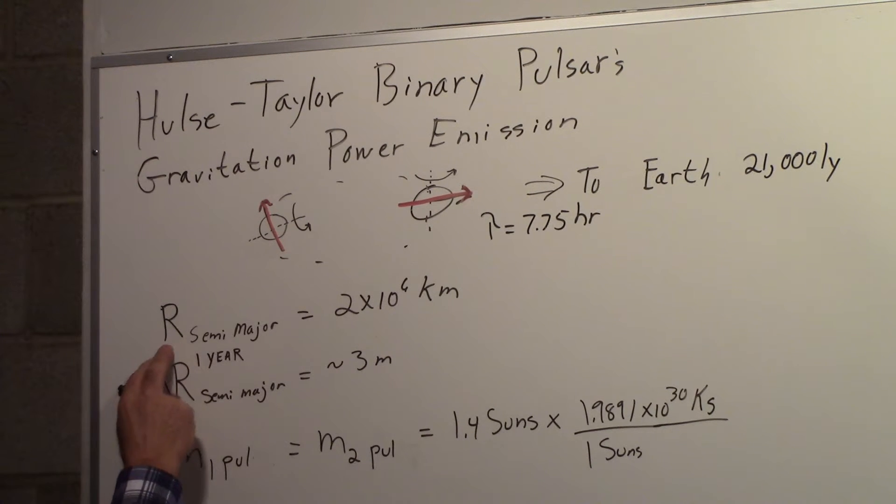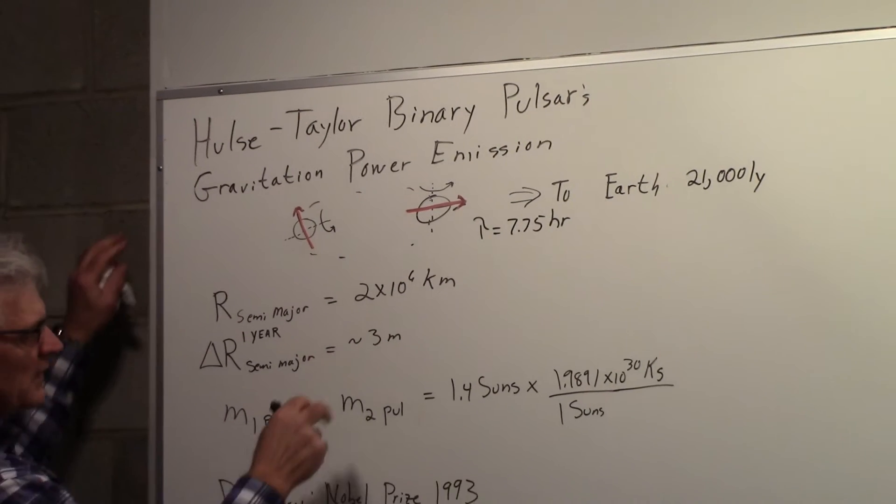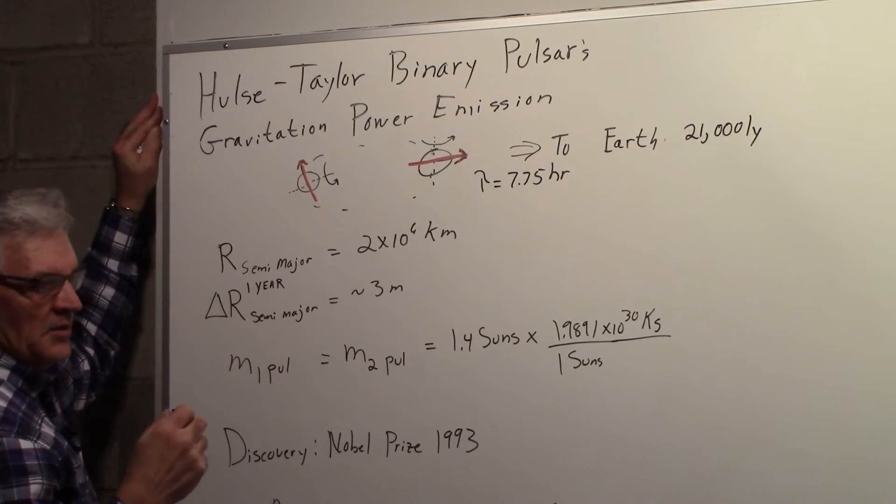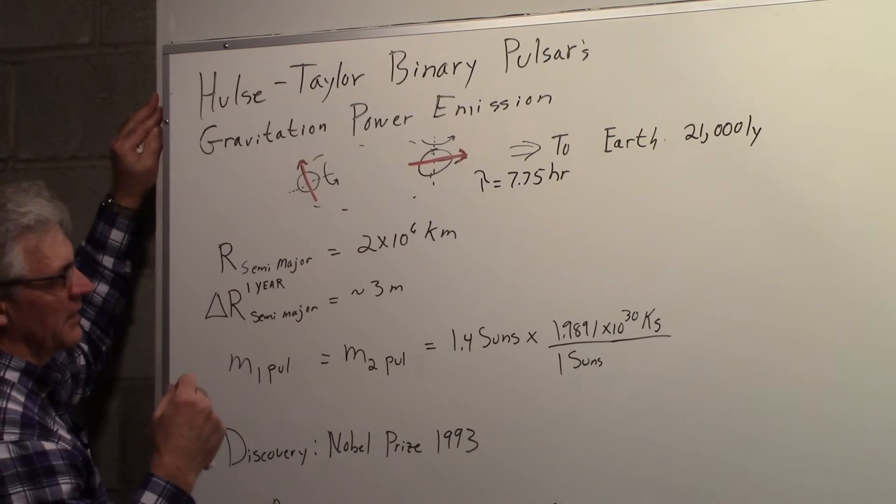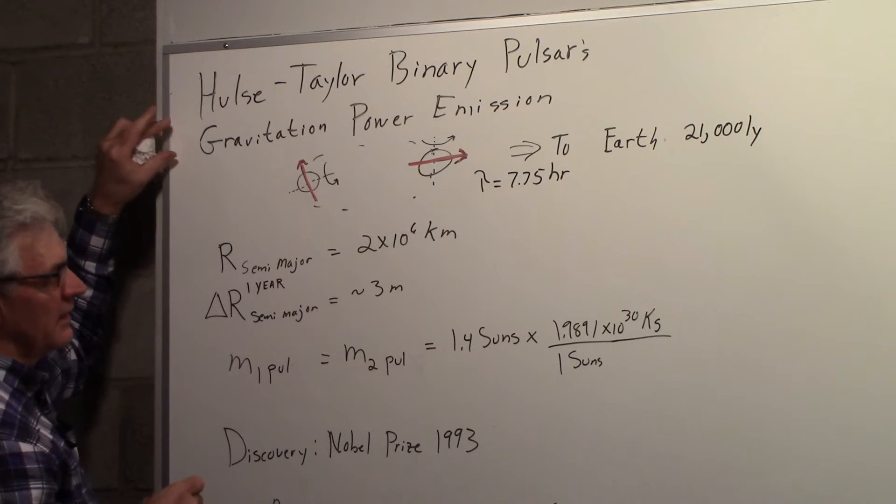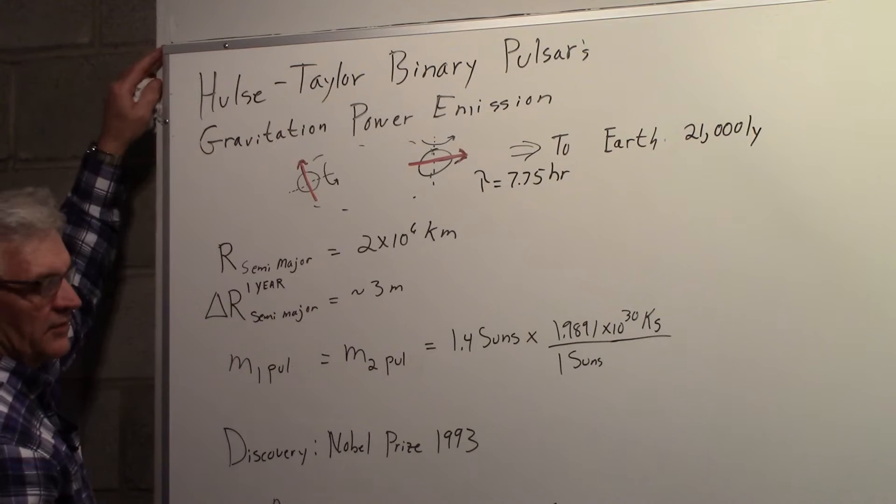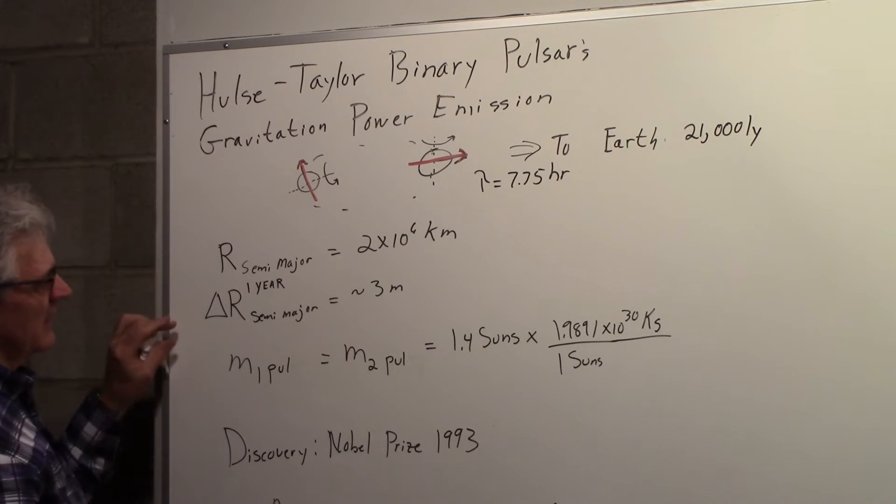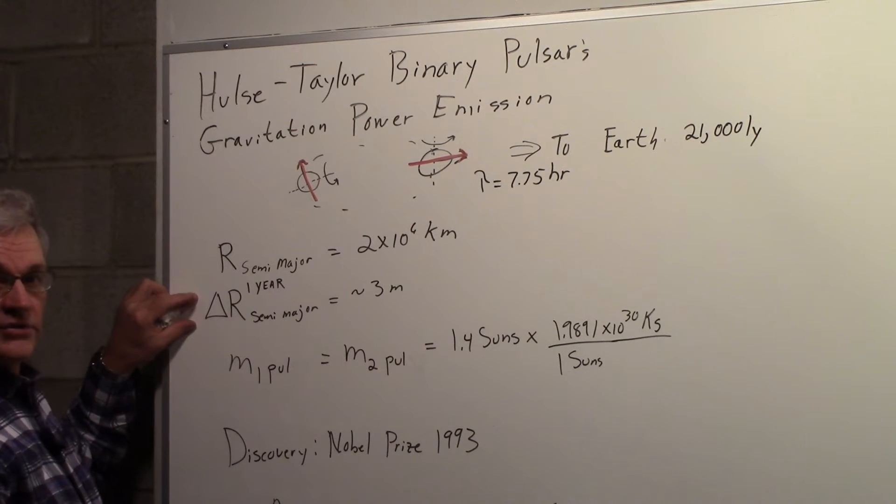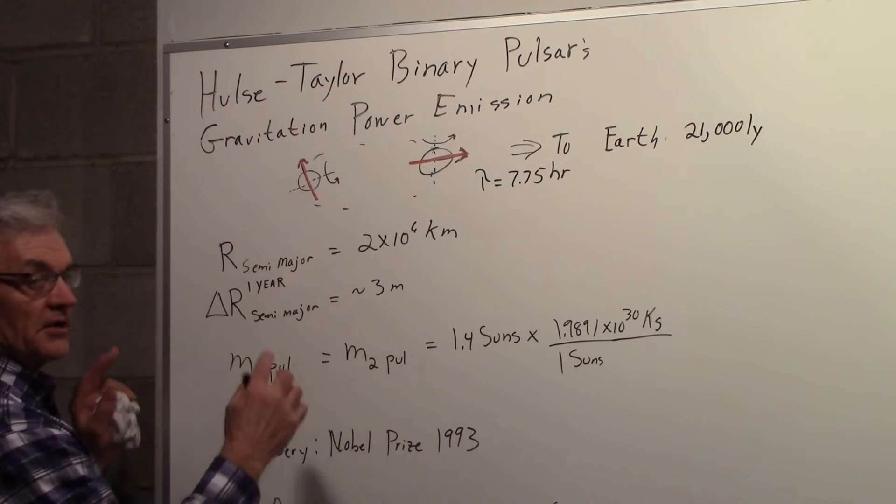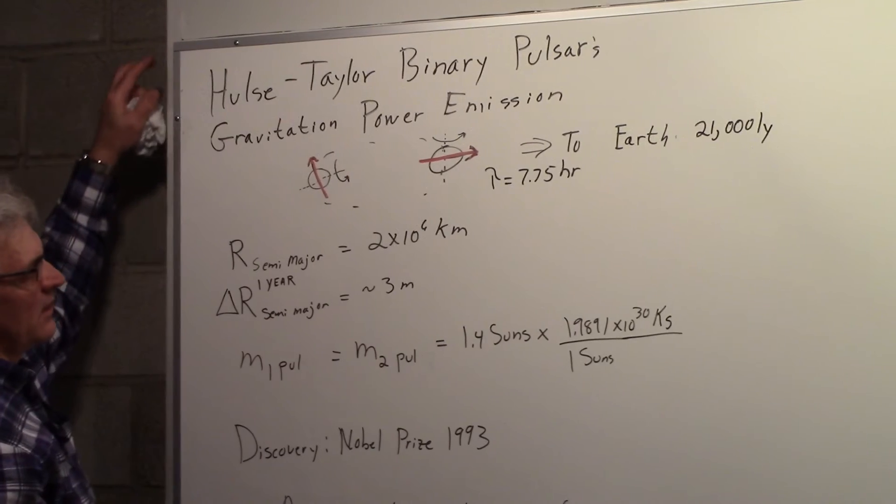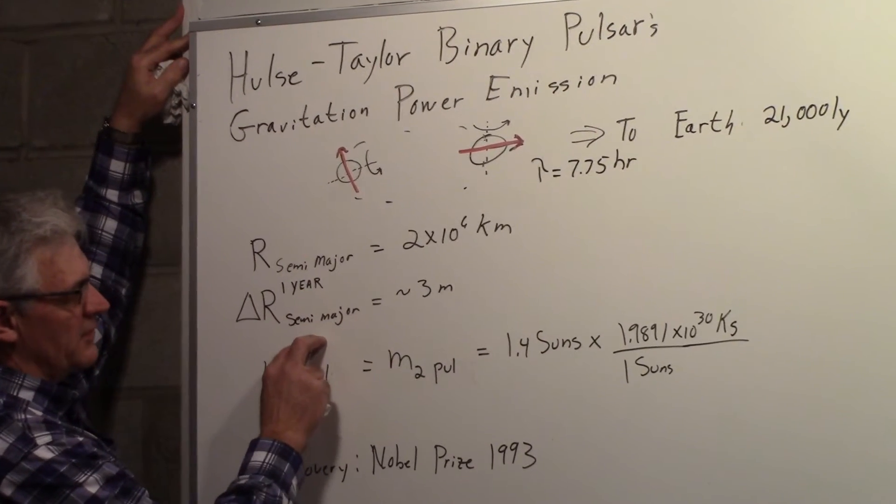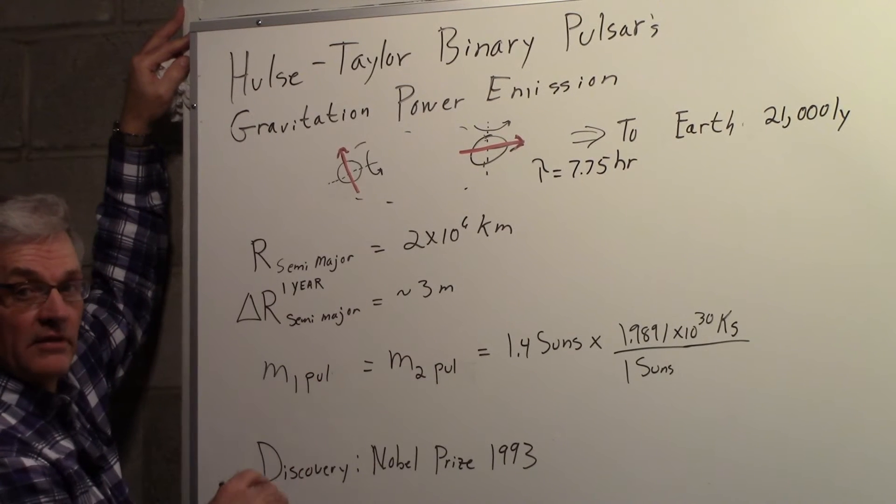The size of the semi-major axis is approximately 2 million kilometers. But the number that we need here to get an idea of what the gravitational power emission is in terms of gravitational waves is how the orbit is shrinking. The two pulsars are spiraling into one another. And the change in the semi-major axis in one year is roughly 3 meters.